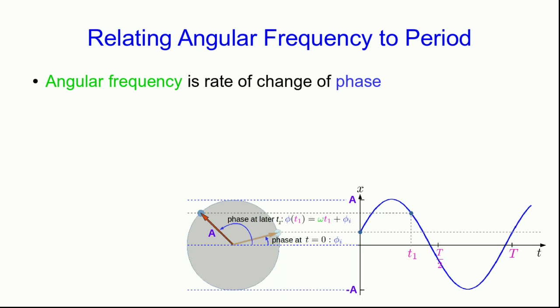Now we would like to relate the angular frequency to the period because that's easier to measure in the lab. Remember that angular frequency is the rate of change of phase, which is the angle that the phasor is making. By definition, angular frequency is change in phase over change in time, and I don't need derivatives because our phasor is going around at constant speed.